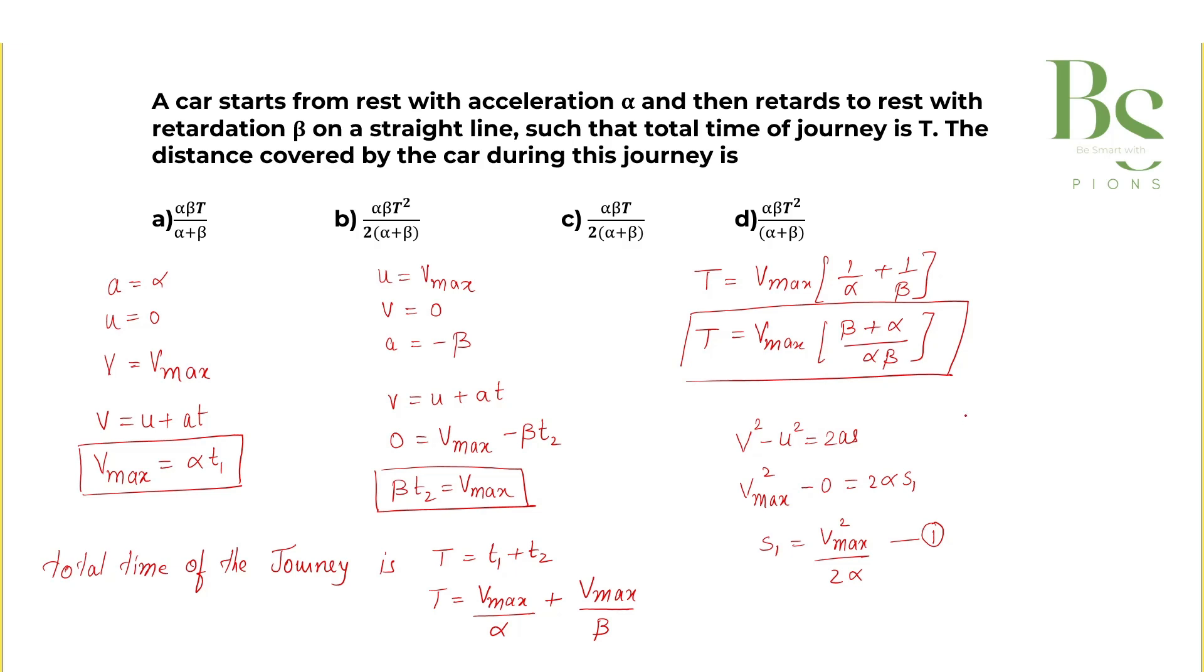Now, next is our retardation part. Retardation part means V squared minus U squared equals 2 A s. What is V? 0 because it is stopping. What is U? V_max squared. And A is minus beta, 2 times minus beta because it's in deceleration part, and distance s2. So our distance s2, negative sign we can cancel out both the sides. S2 is nothing but V_max squared whole divided by twice of beta.